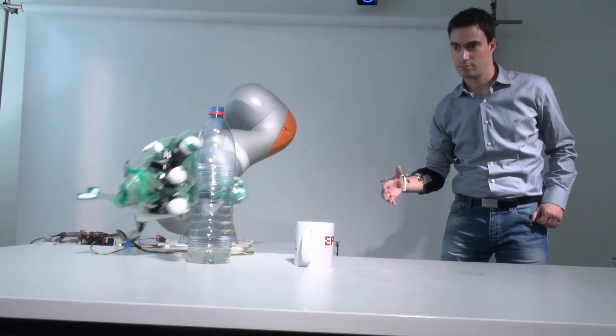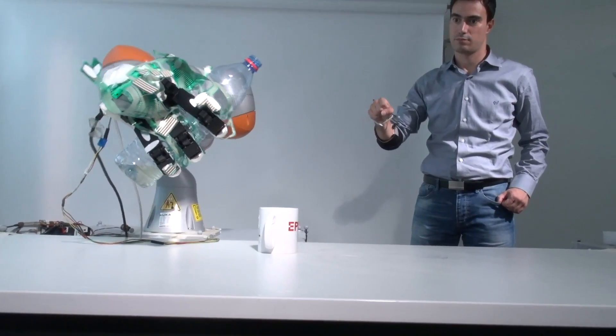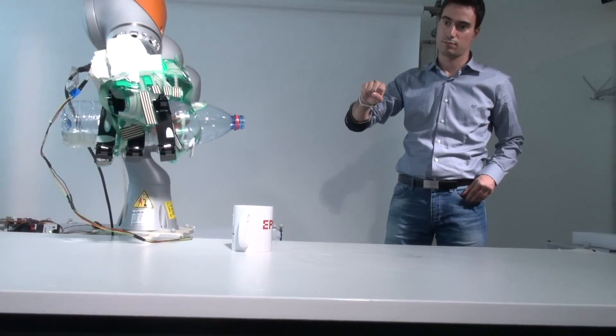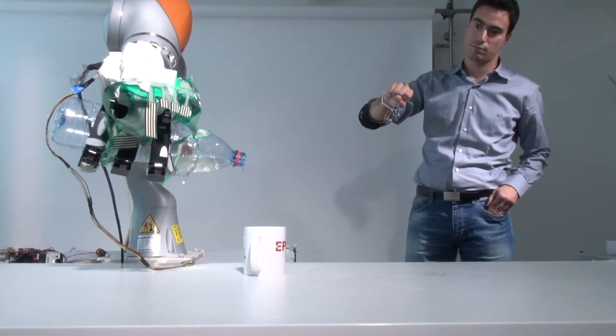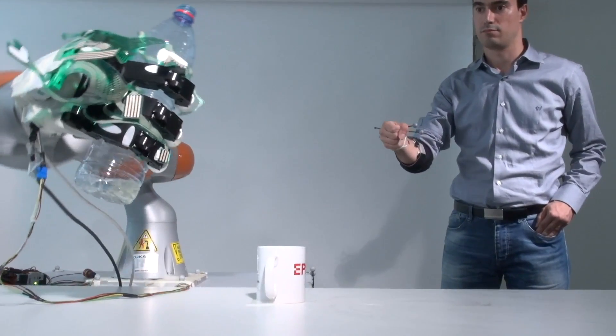Typically when you hold an object in your hand and it starts slipping, you only have a few milliseconds to react. That's where this hand in particular, which has the possibility to react in 400 milliseconds with all these tactile sensors, can really react and move the object and re-stabilize it before the brain could actually perceive that it's slipping.